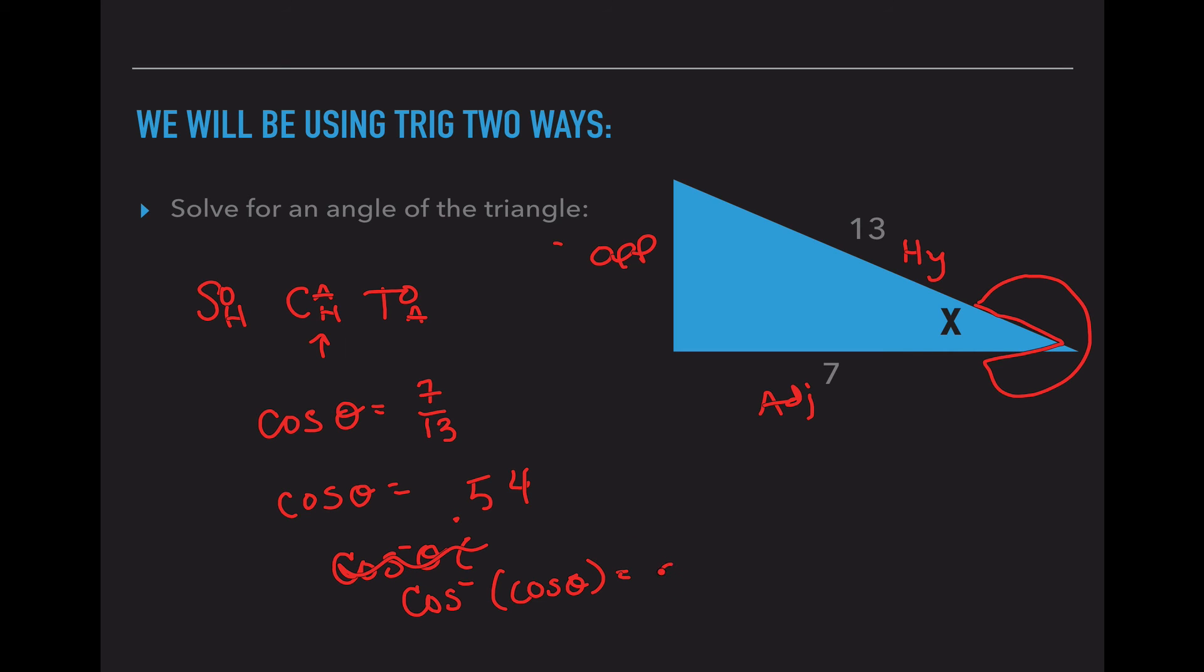Then we want to take the inverse of both sides. I made a mistake here. Ignore that. Those cancel out and we're left with theta equals cosine inverse of 0.54, which equals 57.3 degrees. So that's how we're going to work with our trig. We're going to solve for the legs of the triangle as well as the angles of the triangle. In order to solve for the angles, we have to use inverse of whatever function we have the legs for the triangle for.